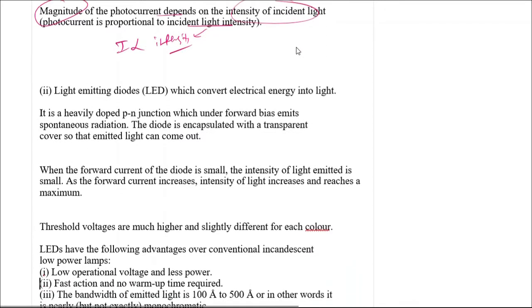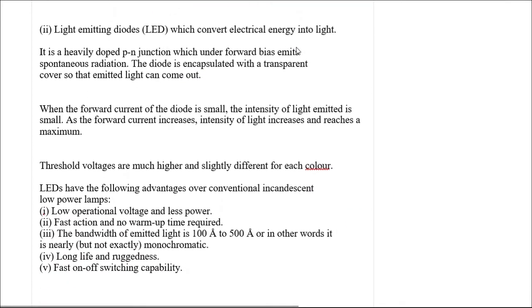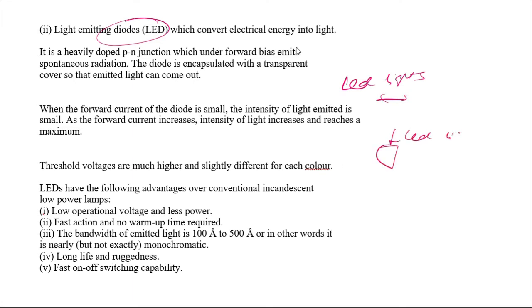The next category of optoelectronic device is the Light Emitting Diode, or LED. We encounter LED lights every day — during festivals we decorate our homes with LED lights. These are heavily doped PN junction diodes and are normally operated under forward bias. When forward bias is applied, light is emitted at the junction.